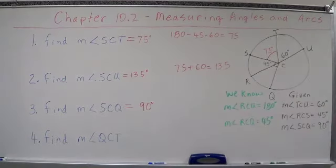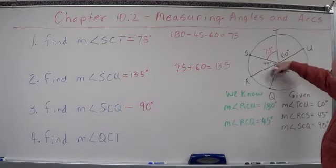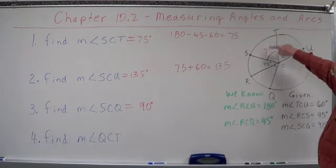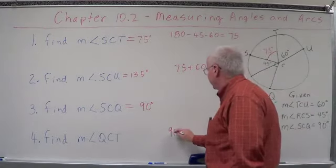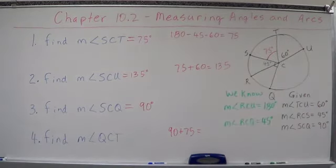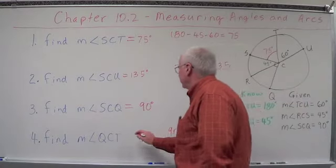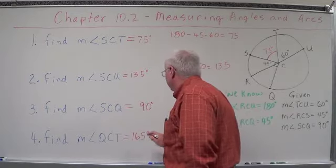Number three we've already found because this was basically given to us. The last one we'll do is QCT. Well, QCT, we know that SCQ is 90, so this whole thing is 90. We know that SCT is 75, so QCT is 90 plus 75. So down here we're looking at 90 plus 75. Add those two together, what do you get? Not to come very close to 165. So we're looking at the measure of that angle being equal to 165 degrees.